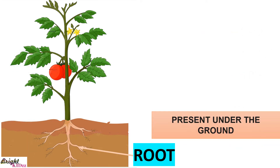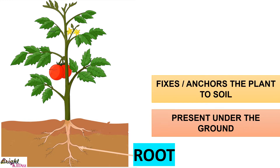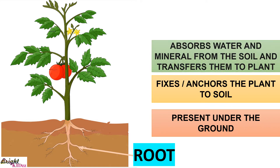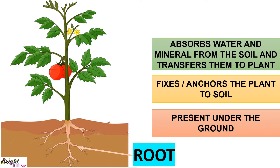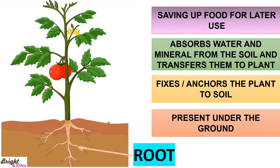First is roots. Roots are the most important and underground part of a plant. They are the major part that anchors the plant firmly in the soil. They absorb water and minerals from the soil and transfer them to the remaining parts of the plant. Moreover, they are also responsible for saving up food for later use.